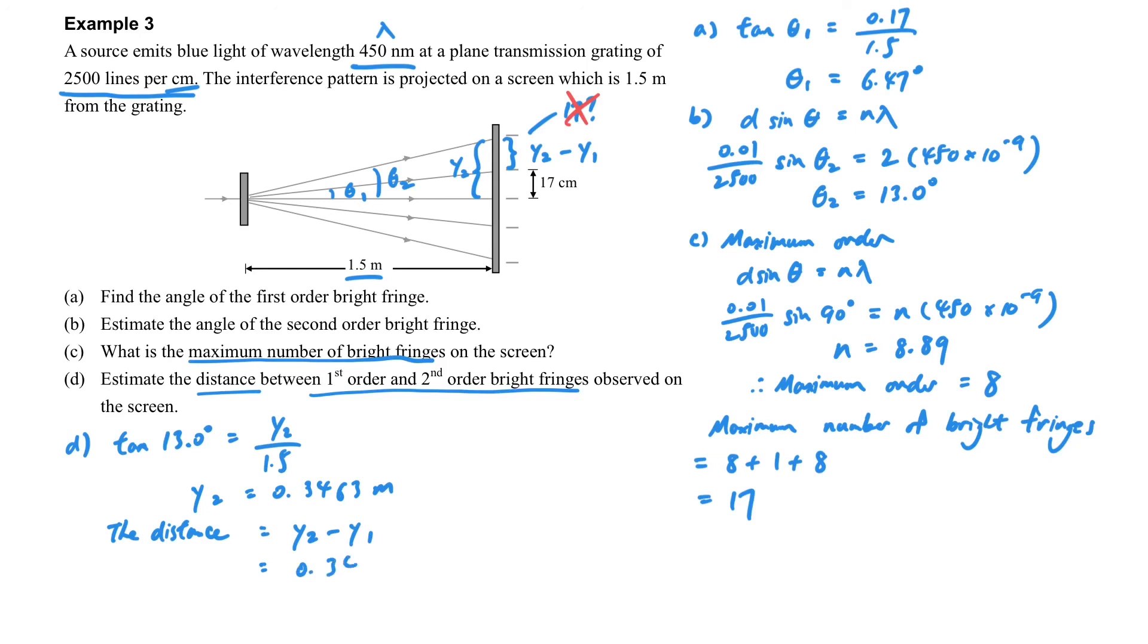We have to find the y2 first - you can see we have solved it already - and minus the y1 in order to find the distance between two successive orders. So this is one characteristic that is special for the grating.